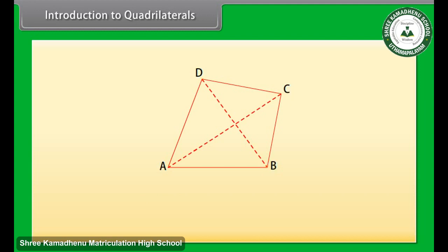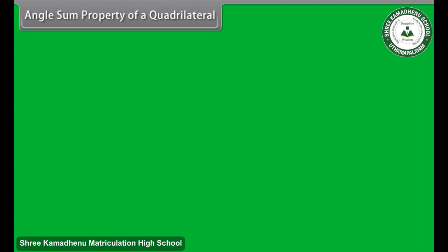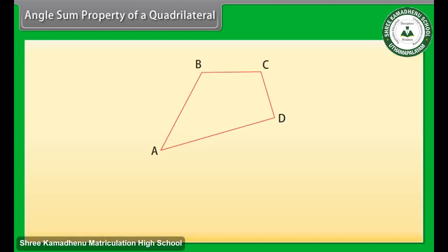So AC and BD are the diagonals. Look at these shapes now — these all are quadrilaterals because they have four sides, four angles, and four vertices.